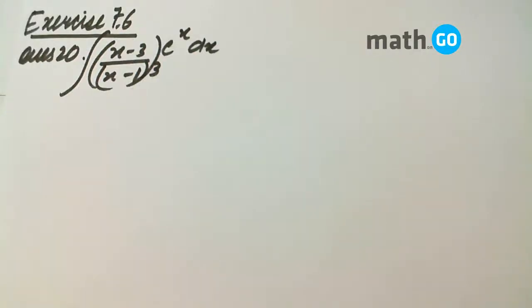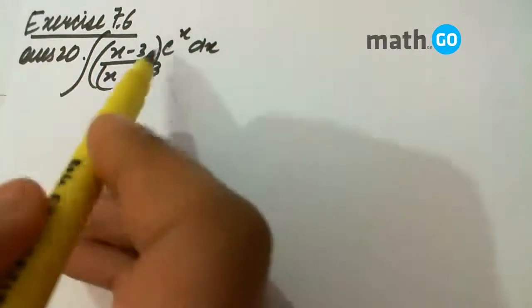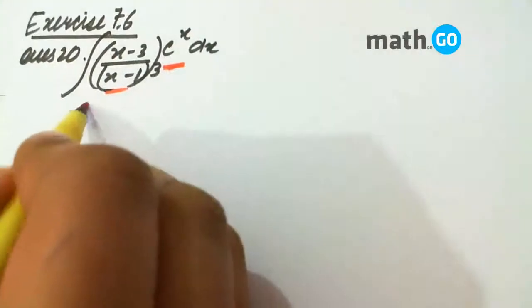Exercise 7.6, question number 20. We see here e to the power x and a function, so we converted it to the form